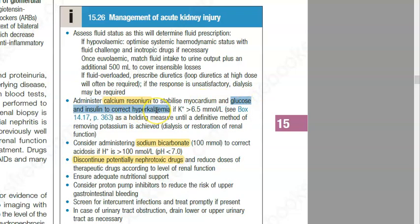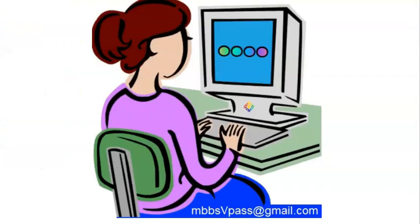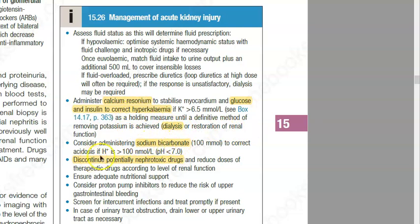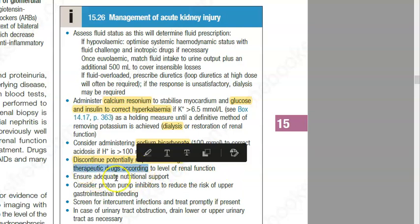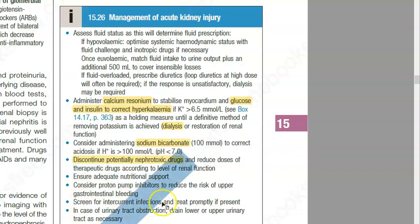Give glucose and insulin to correct hyperkalemia — both glucose and insulin together are given for that. Consider dialysis. Administer sodium bicarbonate if there is acidosis. Discontinue nephrotoxic drugs and reduce the dose of other drugs because the kidney is not working. Provide nutritional support. Treat any infections. If there is obstruction, remove the obstruction.